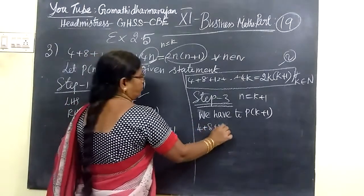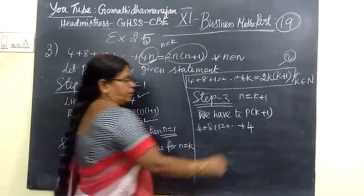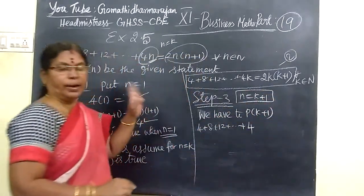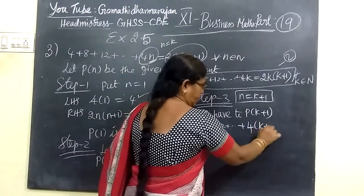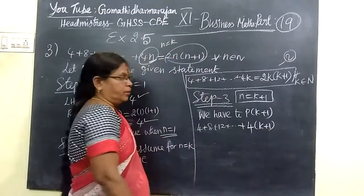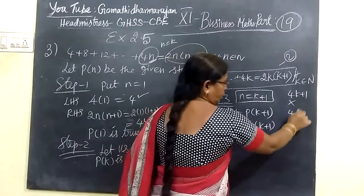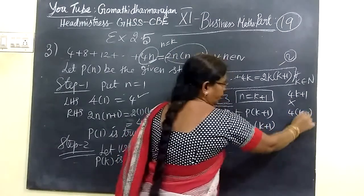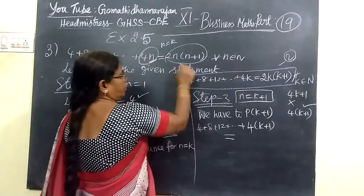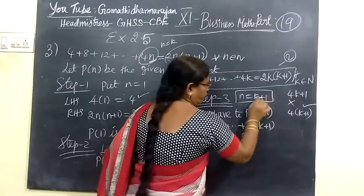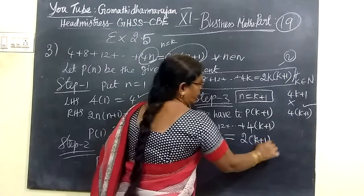See here, K plus 1. The left side is 4 plus 8 plus 12 plus etcetera plus 4K. N equal to K, N equal to K plus 1. So 4 bracket K plus 1. Why I put bracket? Since the number here is 4N, this is 4N. So you are writing 4 bracket K plus 1.